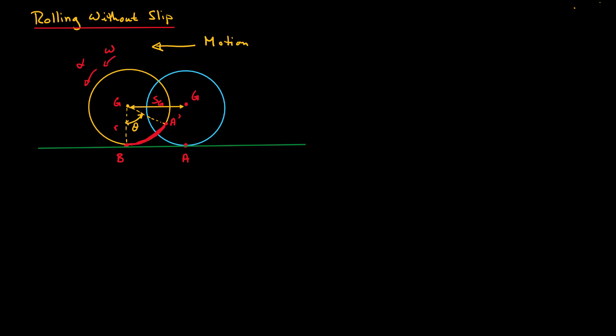We're going to look at point G. This point moves in a straight line to the left, from G to G prime — this is the horizontal displacement we're interested in. How far does the geometric center move between these two points in time? At time one, point A is in contact with the ground. As it rolls, the next point will be in contact, and then the following point, and so on.